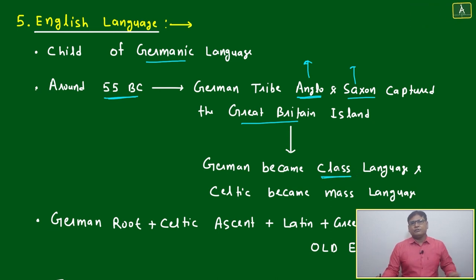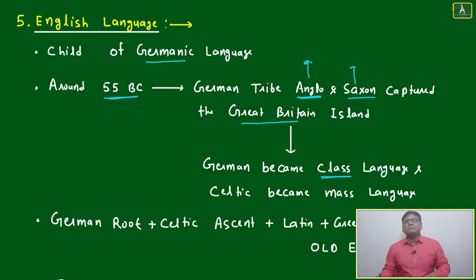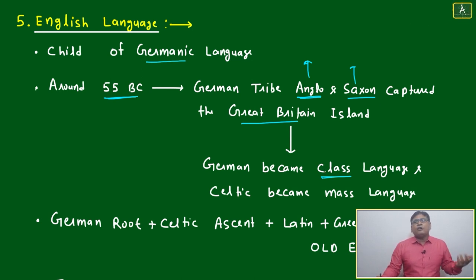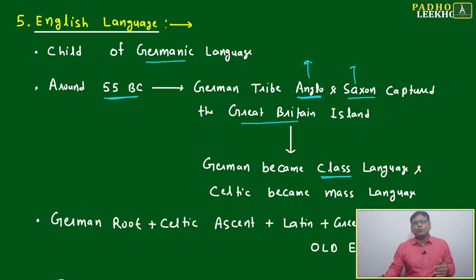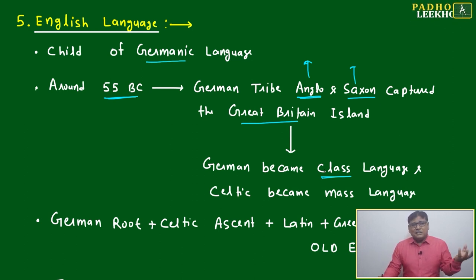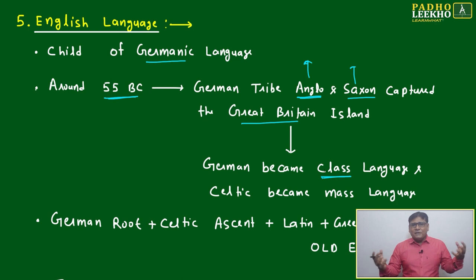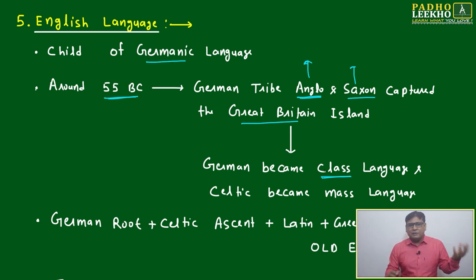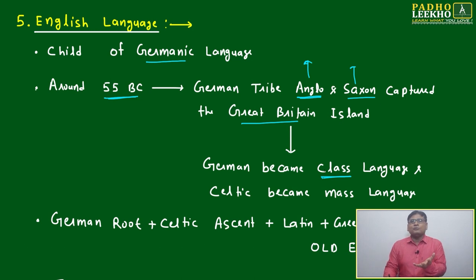For example, like India: Arab people attacked India around 880 AD and ruled for almost a thousand years. What happened is that Arabic and Farsi became the official language. Slowly, from Arabic, Urdu developed in India because Arabic had become the class language. The mass language was Pali, Prakrit, or something different, and from the combination of Pali and Prakrit with Arabic, Urdu developed. The further simplified format of Urdu is Hindi.